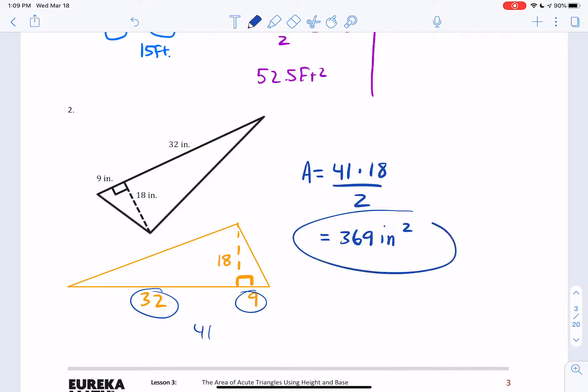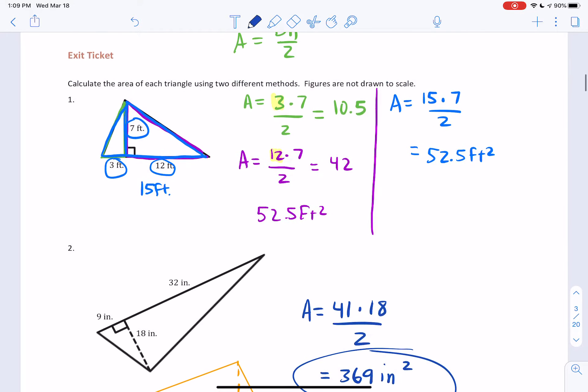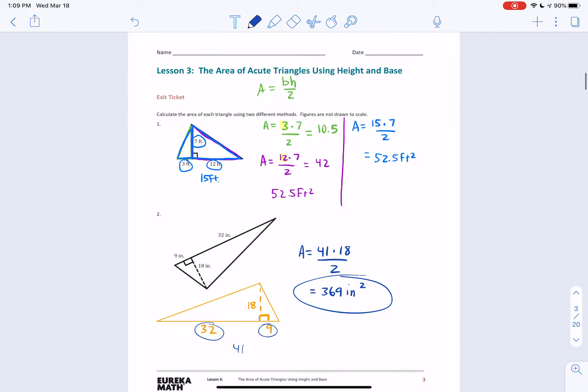So I do want to point out when you enter this answer into the Google form, you're only going to type in the number. You don't have to type in inches squared. So type in the number 369 and it will be correct. Same thing for number 152.5. You don't need to type in the feet squared.